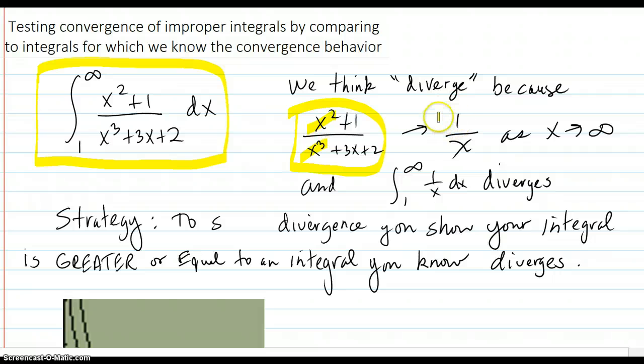Which is going to be going to 1/x. So we're thinking that since the integral from 1 to infinity of 1/x diverges, we're thinking that this integral diverges.